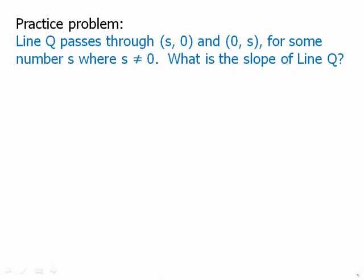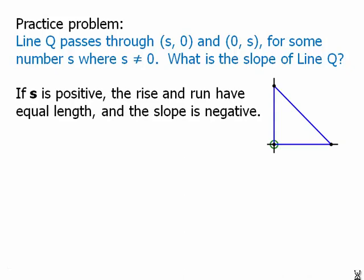Here's a practice problem. We're given that the x-intercept and y-intercept of the line are both equal to s, and we want to find the slope. If s is a positive number, we go in a positive direction along both axes, so the line passes through the first quadrant. The rise and the run have equal magnitude, and the slope is negative, giving us a slope of negative one.